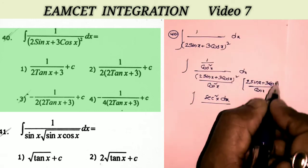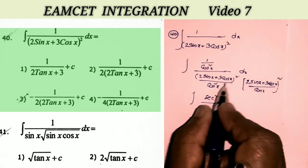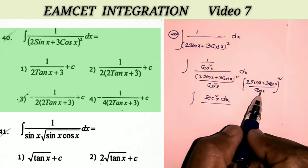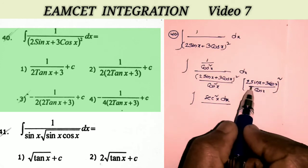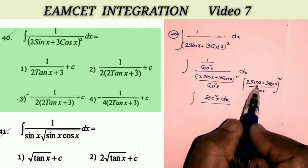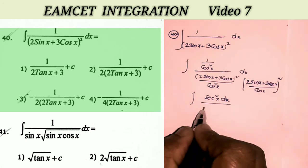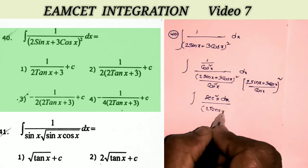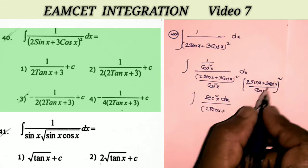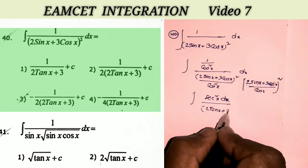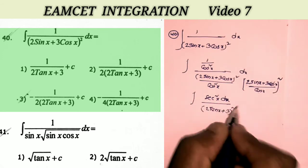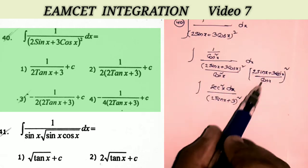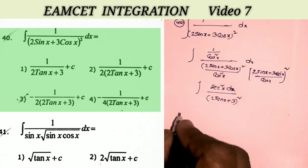Writing the total value in a single square and separating the denominator: 2 · (sin x / cos x) + 3 · (cos x / cos x), that is (2 tan x + 3) whole square.